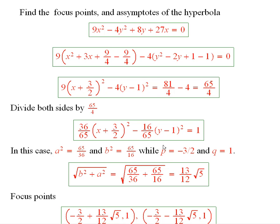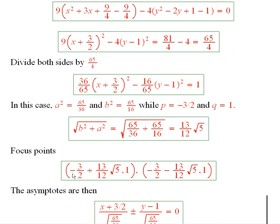And so therefore you have p is equal to minus 3 halves and q is equal to 1. So therefore the square root of a squared plus b squared is just this here. And so from the procedure the focus points are given right here.